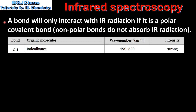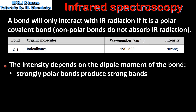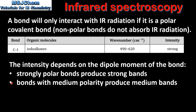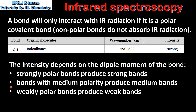A bond will only interact with infrared radiation if it is a polar covalent bond. Non-polar bonds do not absorb infrared radiation. In the data booklet the last column tells us the intensity of the infrared absorption. The intensity depends on the dipole moment of the bond. Strongly polar bonds produce strong bands, bonds with medium polarity produce medium bands, and weakly polar bonds produce weak bands.